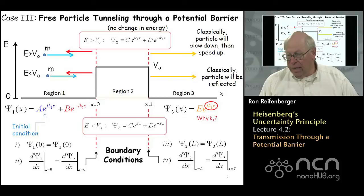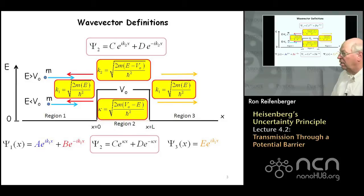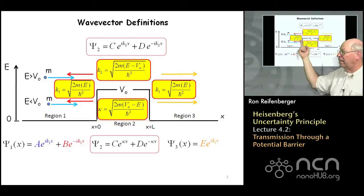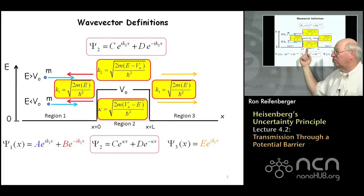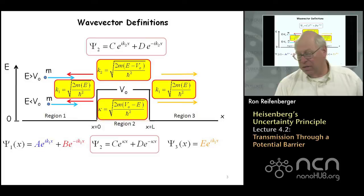It's important to understand how the wave vectors k₁, k₂, and kappa are defined. I try to clarify that in this slide, writing down the definitions of the wave vectors for all regions of space. It's important to understand these definitions and how we got them — if you don't understand how to write down these wave vectors, you probably don't understand why these are the correct wave functions for the three regions of space. That's something you'll have to work through on your own.